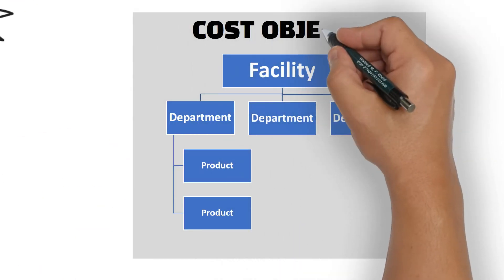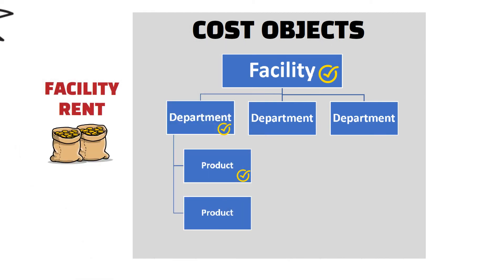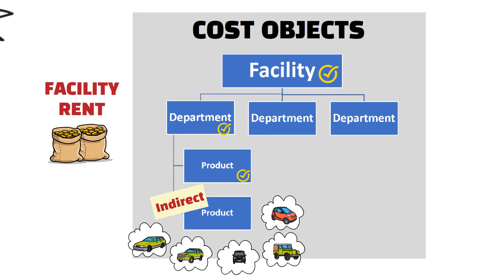The nature of the cost object is one of the factors. The cost object can be a product, a department, an activity, or any other object for which a cost measurement is needed. The rent of the facility is an indirect cost if the cost object is the various car models produced by the facility, but is a direct cost to the facility itself if the production facility is the cost object.